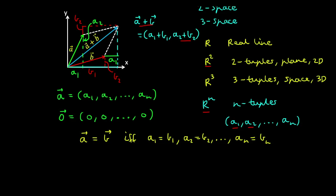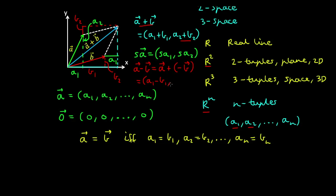Similarly in 2-space, we can visualise that multiplication of a scalar by vector a is the same as multiplying that scalar by the vector's individual components. This extends to the subtraction of two vectors, where we add a to the negated vector b — the same as subtracting their components in the horizontal and vertical directions. We can generalise these operations to n-space, extending properties including linearity, commutativity, and associativity.